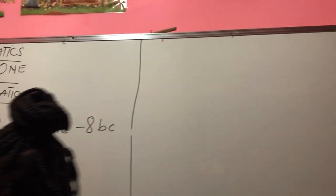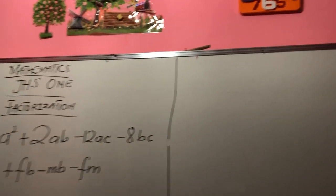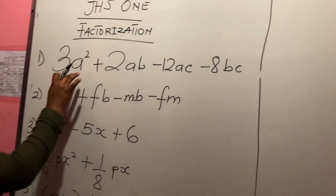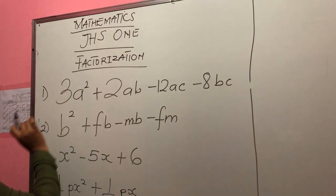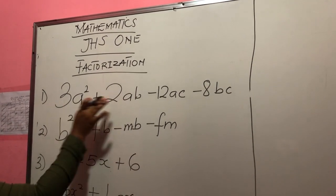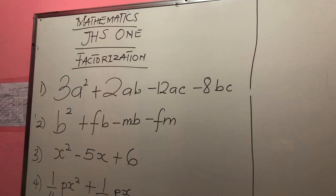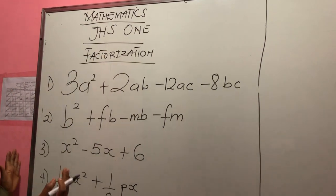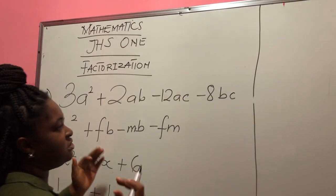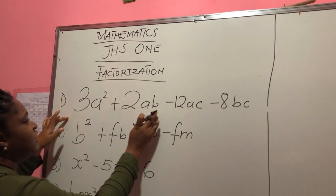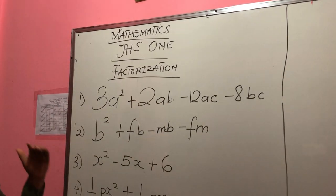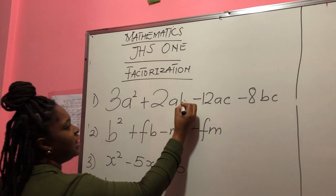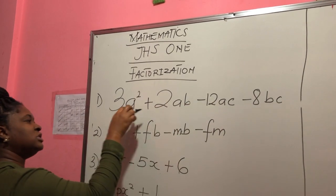Now, when you are grouping in factorization, you have to make sure that the variable — both the groupings you are doing — you must have a variable that is common to both of them. Grouping means putting numbers in a bracket and putting another set of numbers in another bracket. So I can group this first one and group this second one. Why can I group it? Because I can realize that there is a common variable, which is A.